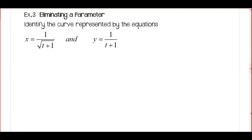Let's take a look at another type of example. This is eliminating a parameter. What we want to do is convert this back to a rectangular equation. When we do that, we'll be able to tell what this parametric equation represents. I'm going to solve our y equals equation for T.